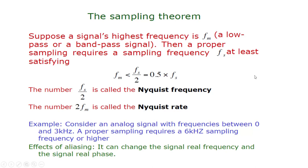The sampling theorem says that suppose the signal's highest frequency is FM — it can be either a low pass signal or a band pass signal — then proper sampling requires a sampling frequency FS of at least twice the maximum frequency component present in the signal. This number FS by 2 is called the Nyquist frequency, and twice the maximum frequency component is called the Nyquist rate.